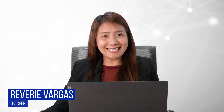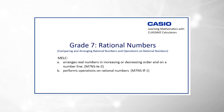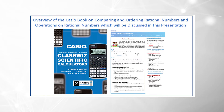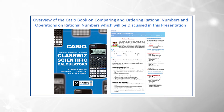Good day, dear learners and teachers. I am Reverie I. Vargas, a junior high school mathematics teacher. In this video, we will explore how we can use the Casio Classwiz calculator with rational numbers. We will focus on comparing and ordering numbers, including performing operations on real numbers. The examples and steps discussed are also indicated in the Casio Book on Comparing and Ordering Real Numbers and Operations on Real Numbers.